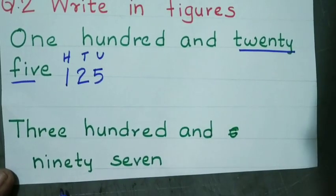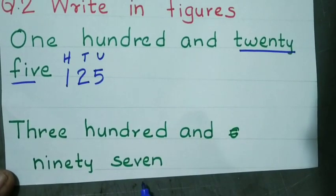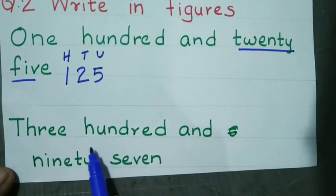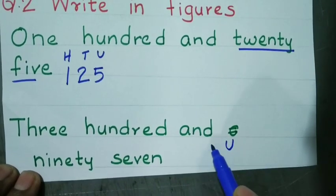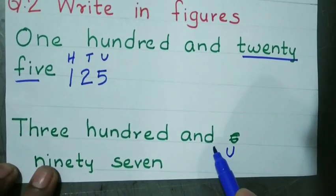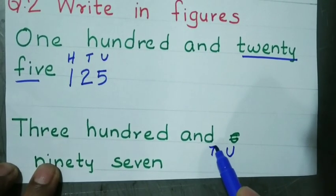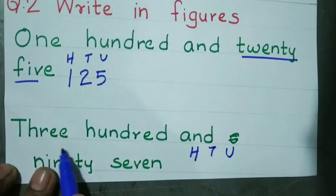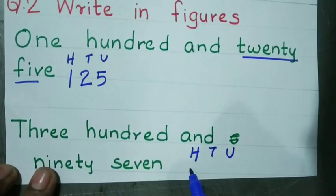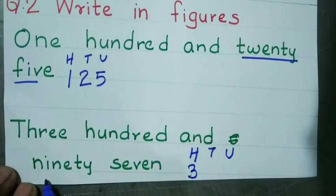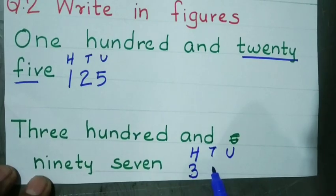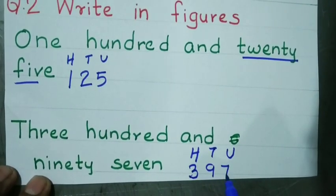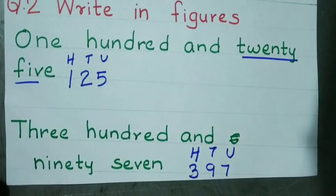3 hundreds and 97. Since 100 means a 3-digit number, you need units, tens, hundreds. Write 3 at the hundreds place, and 97 at the remaining places. So the number is 397.